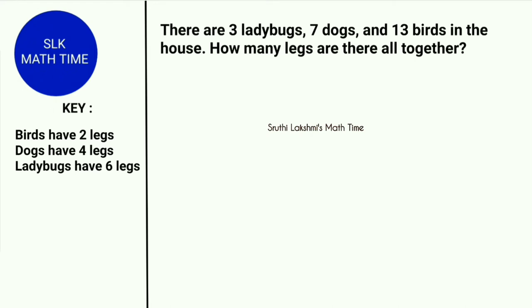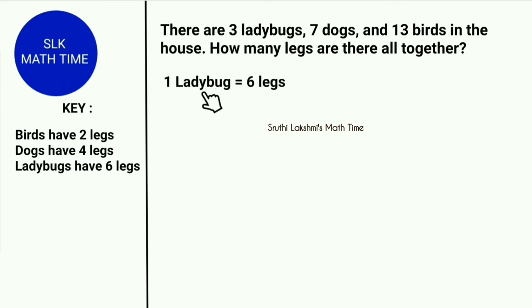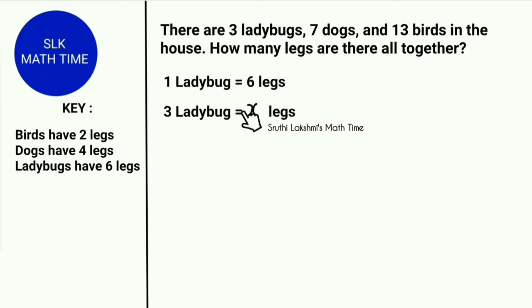Let's see another word problem. There are 3 ladybugs, 7 dogs, and 13 birds in the house. How many legs are there altogether? First let's find the legs for 3 ladybugs. Remember, one ladybug has 6 legs. We have to find how many legs 3 ladybugs have. So 3 ladybugs equal x legs — x is the unknown. We have to cross multiply 1 into x, then cross multiply 3 into 6.